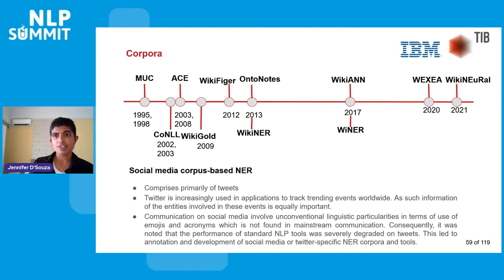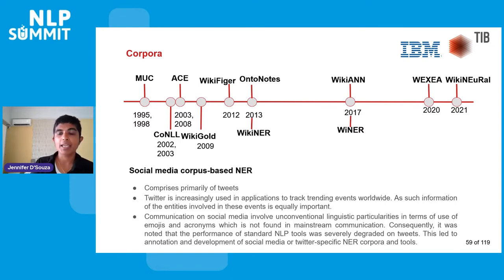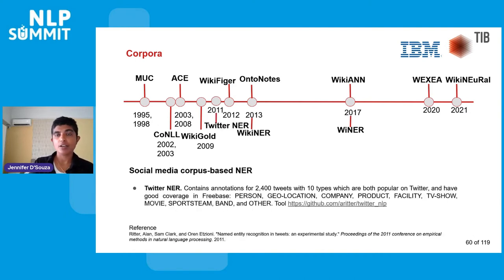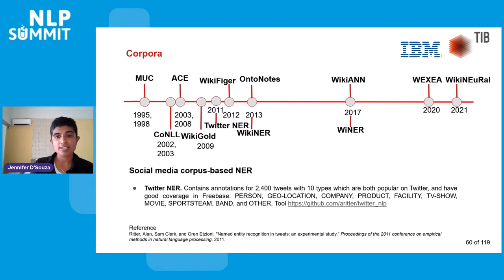The WikiNeural corpus, released in 2021, combines neural and knowledge-based methods for silver data creation for multilingual NER, leveraging Babelnet's fine-grained entity types to generate multilingual annotated datasets. We then see a shift to the social media domain. Corpora targeting social media mainly involved tweets, with Twitter leveraged as the data source. The first corpus here was TwitterNER, containing annotations for 2,400 tweets with 10 entity types popular on Twitter and with good coverage in Freebase.